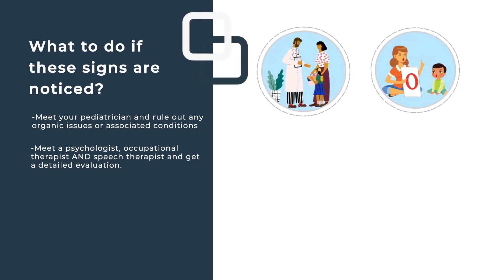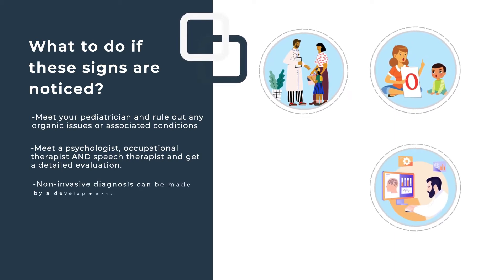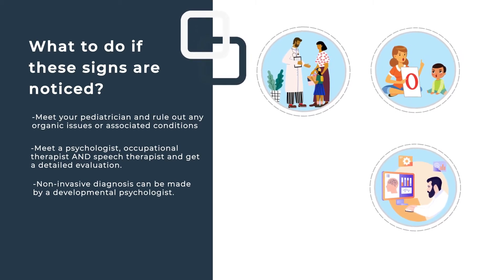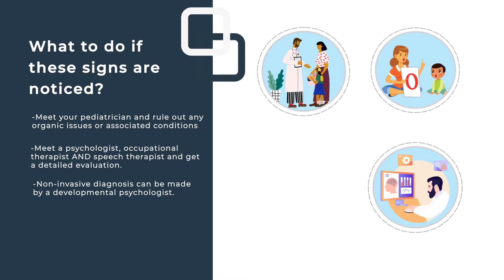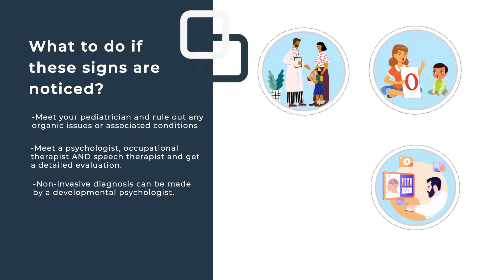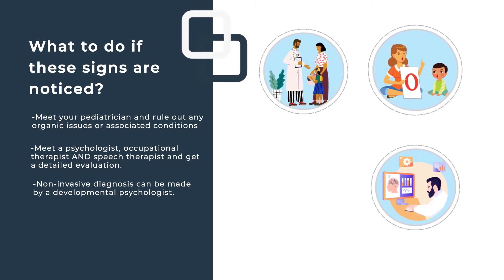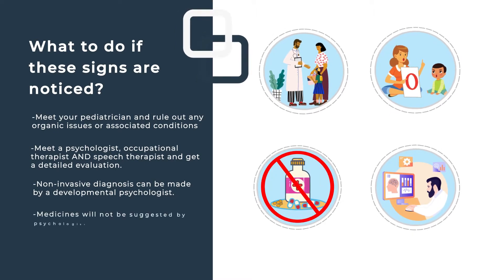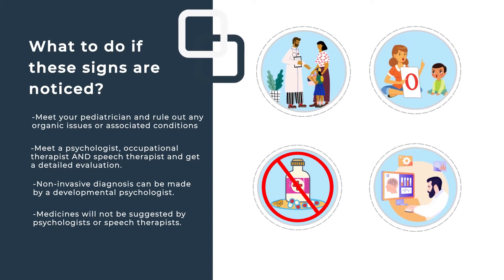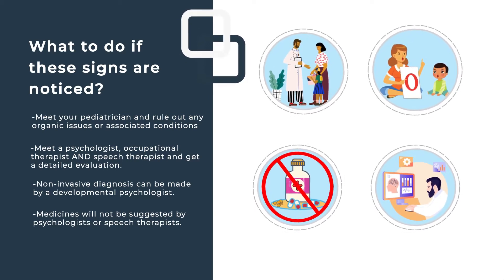When you set up your appointment, be prepared to spend at least two to three hours per discipline. They will take a detailed history of the child's birth and milestones they may or may not have met. Once all assessments are done, you will receive a detailed profile of your child's strengths and challenges. None of the procedures will be invasive, and no medicines will be prescribed.